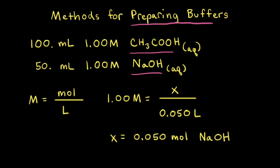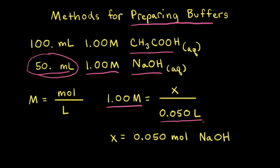We can do a similar calculation to determine the moles of strong base. For our aqueous solution of sodium hydroxide, we have 50 milliliters at a concentration of 1.00 molar. Plugging in the concentration and the volume — 50 milliliters equals 0.050 liters — and solving for x, we find that x equals 0.050 moles of sodium hydroxide.